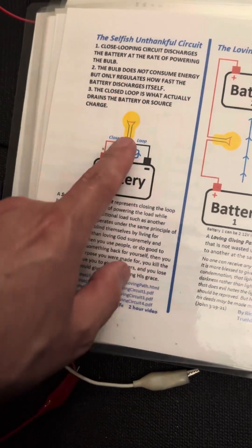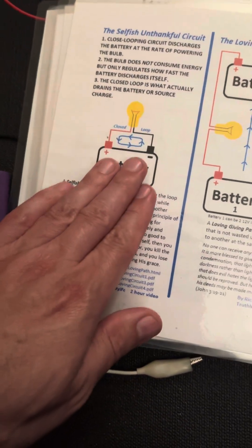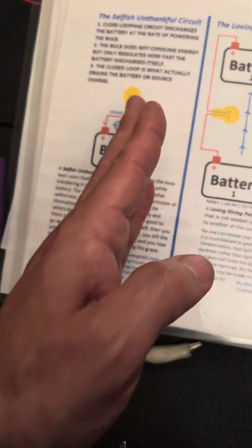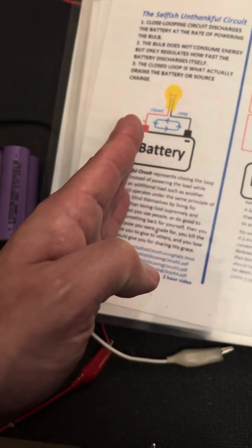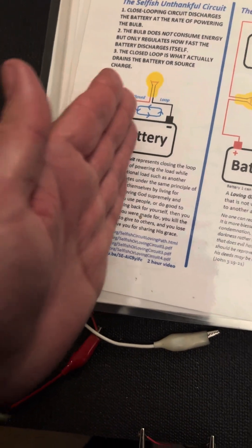See, when you have one battery and you run the light, the battery discharges itself at the rate of powering the load. So the charge moves from one side of the battery to the other side, and then you have to plug it into a charger and that moves the charge back over to the other side, right?